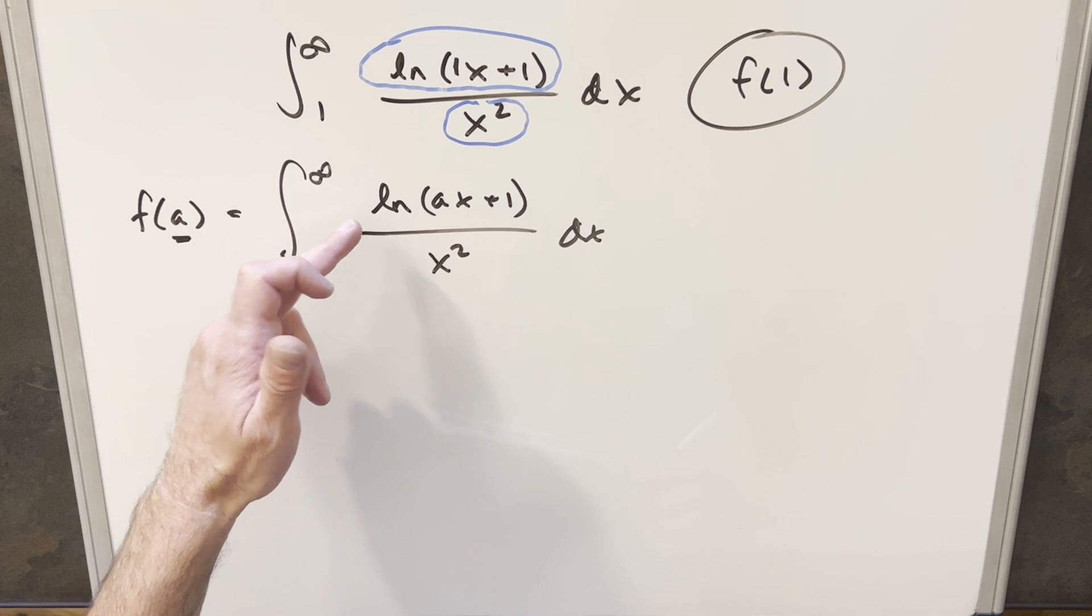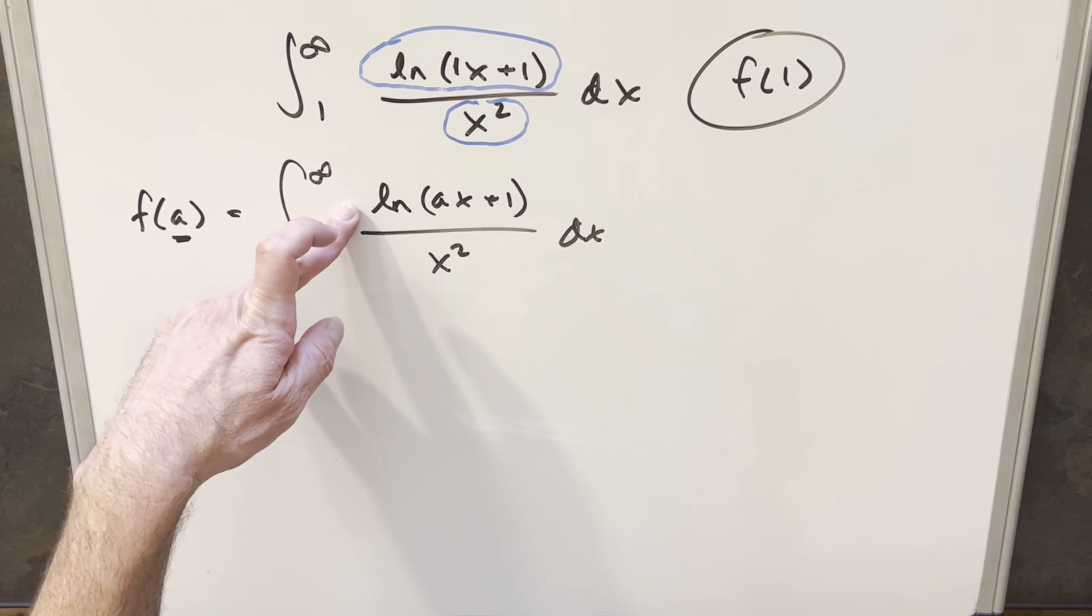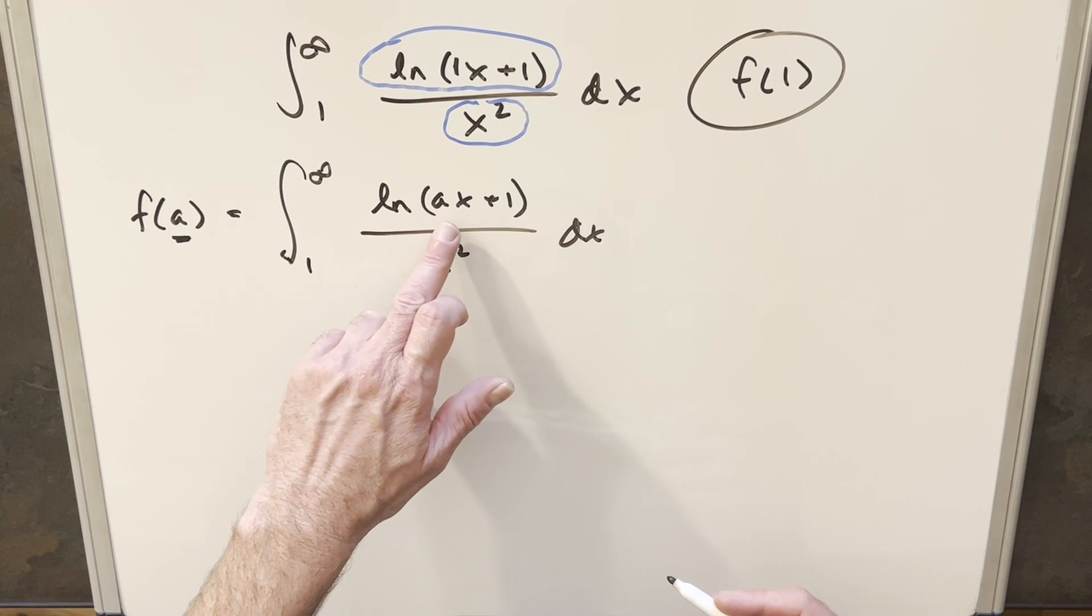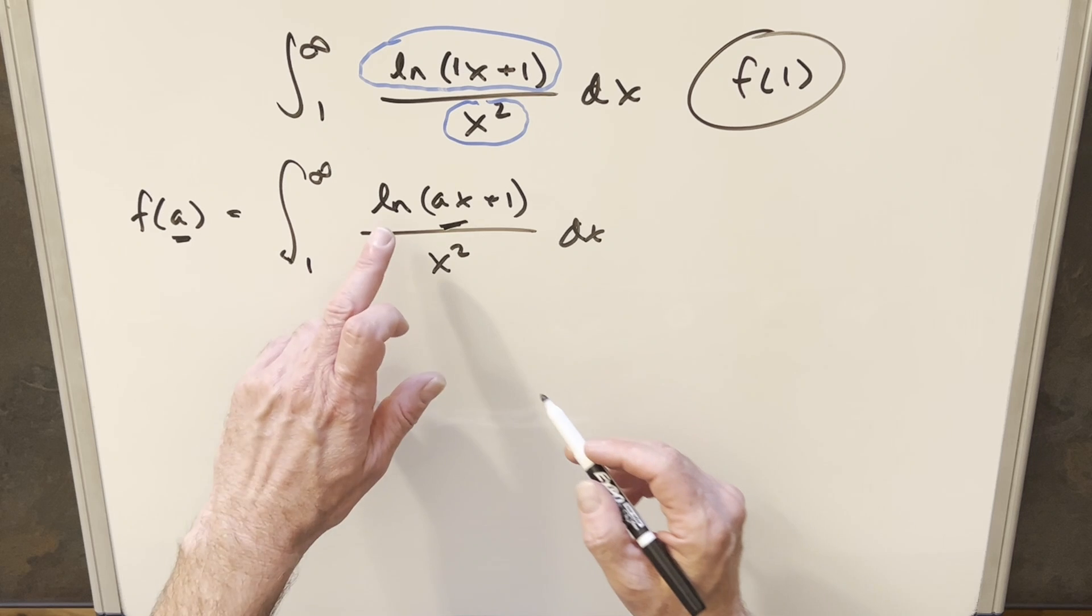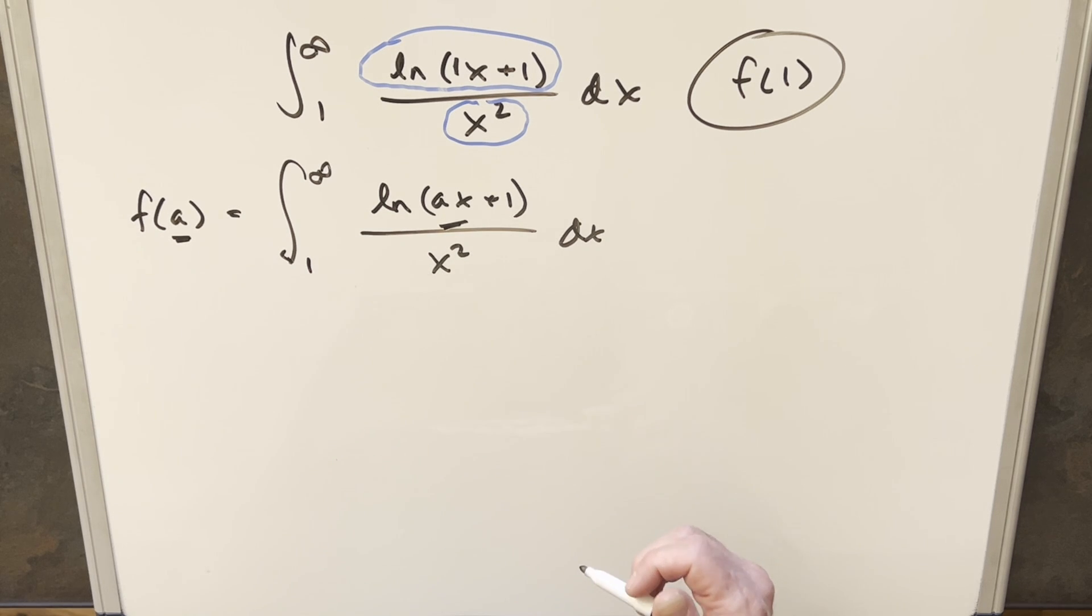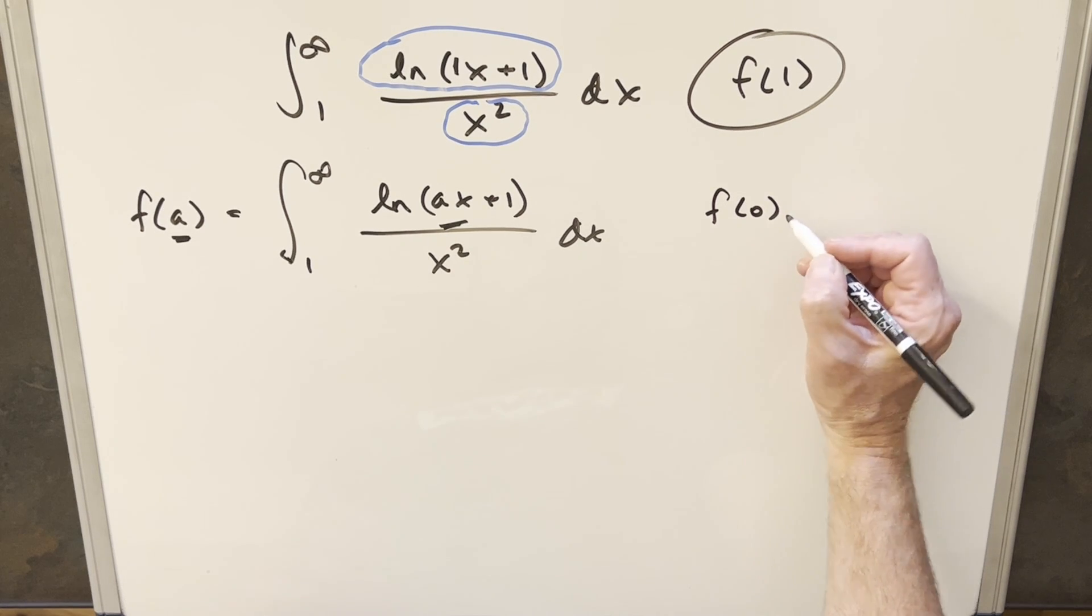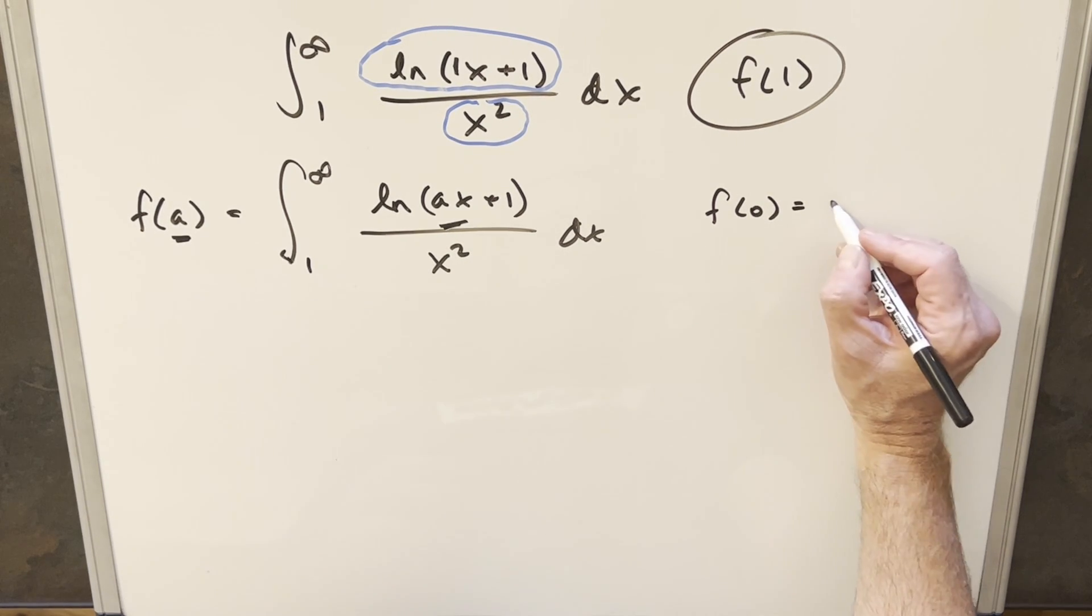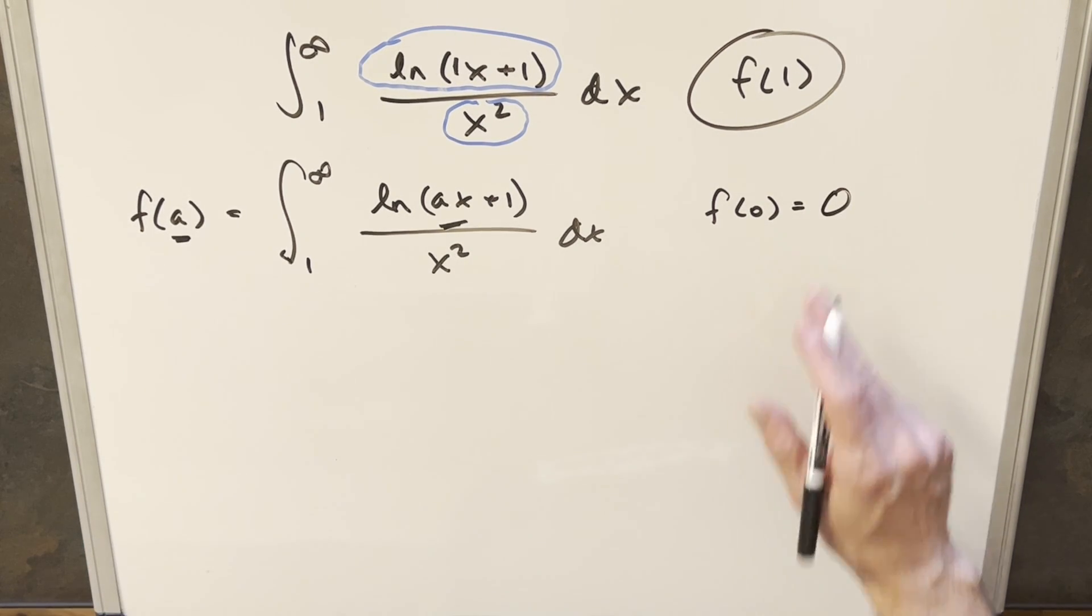One thing that's nice about doing it this way is it's going to be easy to get a known value. Because when a is 0, it's just going to wipe out this part, and you're going to have natural log of 1. Natural log of 1 is 0, so then the whole integral is 0. So we have this known value. For f of 0, we're going to say this whole function is just equal to 0.